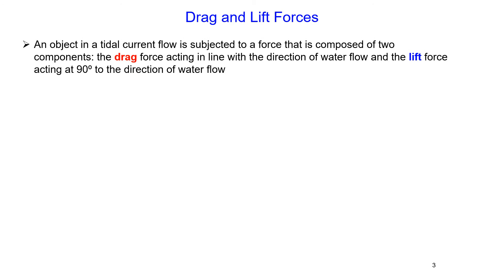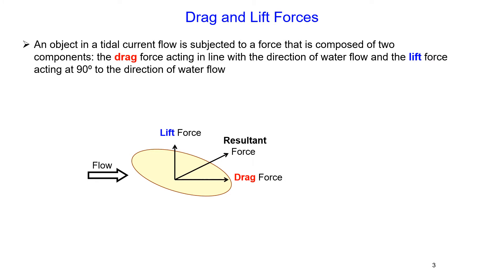An object in a tidal current flow is subjected to a force composed of two components: the drag force acting in line with the direction of the flow, and the lift force acting at 90 degrees to the direction of water flow. For example, we have flow from left to right and an object placed within this tidal current flow. The resultant force includes the drag force in line with the flow and the lift force acting at 90 degrees to the direction of the flow.